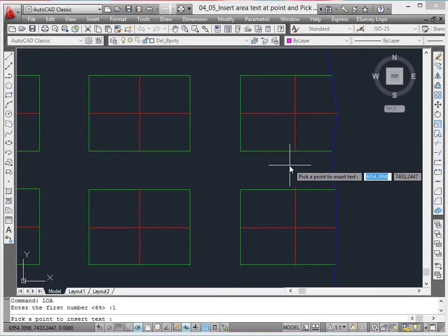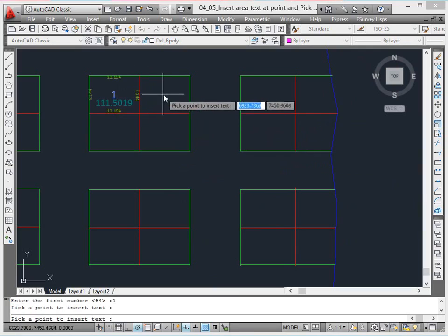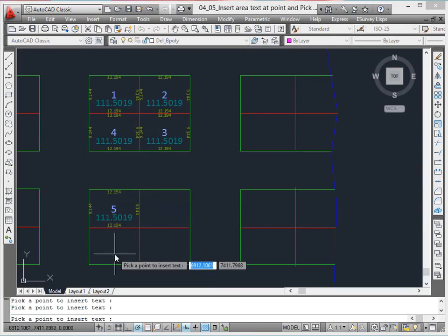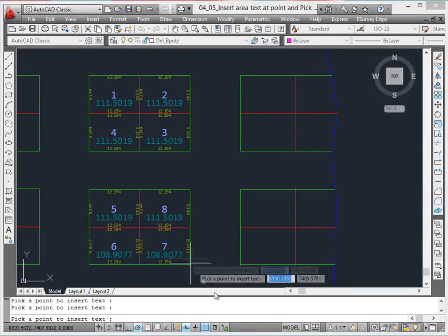Parcel area. The Parcel command can sequentially number the parcels along with marking area for each plot and dimensioning the polygon segments.